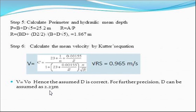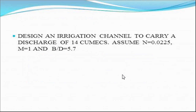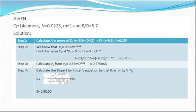This is the standard stepwise procedure for designing a canal using Kennedy's theory. You must remember the formulas — without them you cannot perform the calculations. Now for the second case problem: design an irrigation channel to carry a discharge of 14 cumecs. Assume rugosity coefficient n = 0.0225, m = 1, and b/d ratio = 5.7. Using this data, design the canal section by Kennedy's theory.